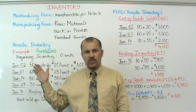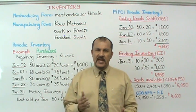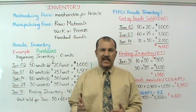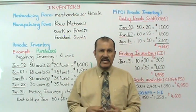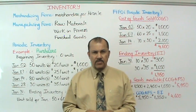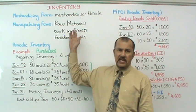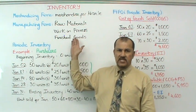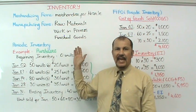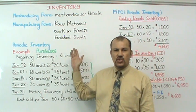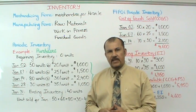If it's a manufacturing firm, they tend to have at least three inventory accounts. What are they? You have raw materials inventory, work in process inventory, and finished goods inventory.